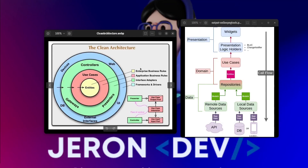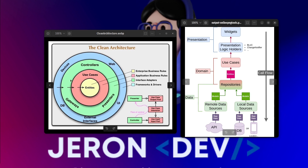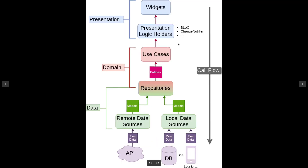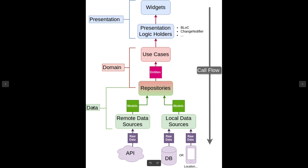I have two diagrams here and these two diagrams are similar — they're all trying to describe the same concepts. One is a more detailed view and the other shows how the different layers interact with each other. We have use cases and entities in both. Looking at the second diagram, we can identify three main sections — we call them layers: the presentation layer, the domain layer, and the data layer.